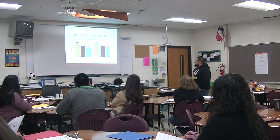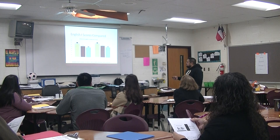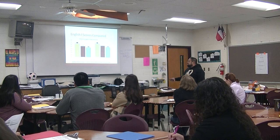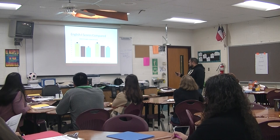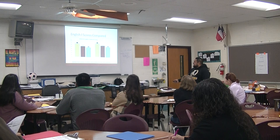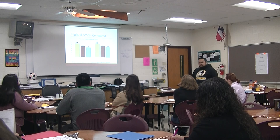However, if we compare ourselves to the state, the first column shows the state average, then our campus, then the district average — which is an average of us and our sister school. Compared to the state, our students are still performing subpar. Although we saw increases in all categories in 2019, we're at 58 while the state is higher. Donna High students are scoring below state average — that is a fact, regardless of the jumps we've made.